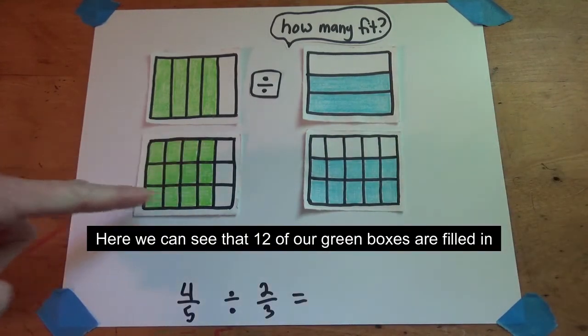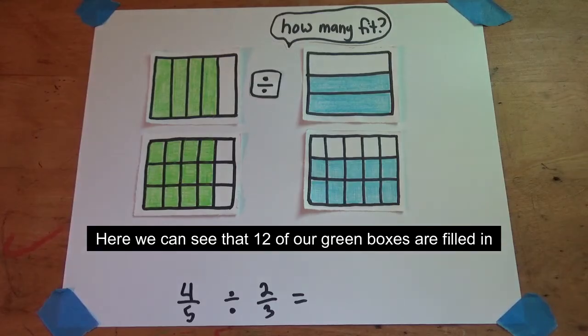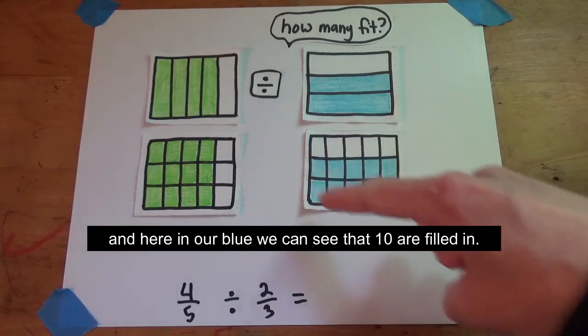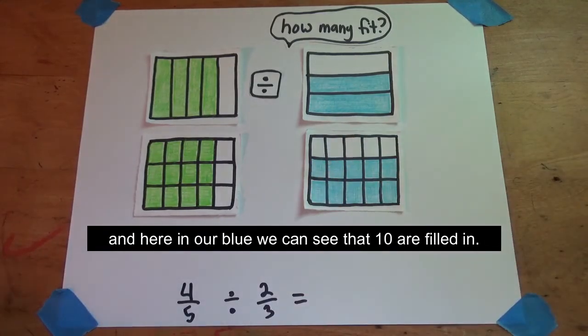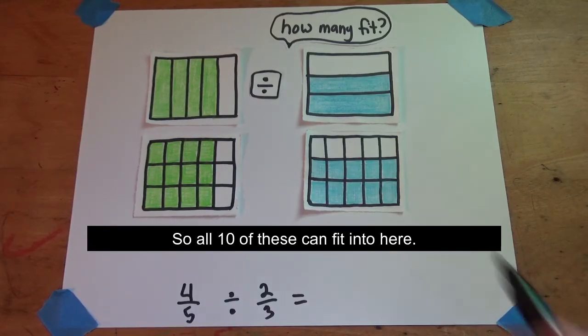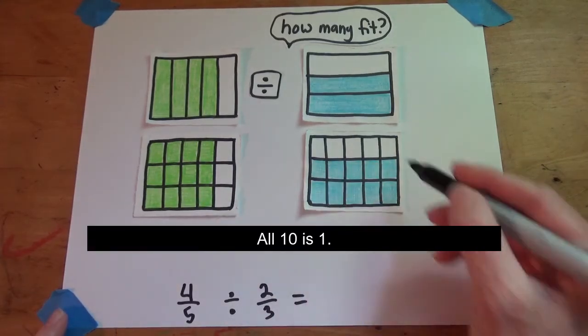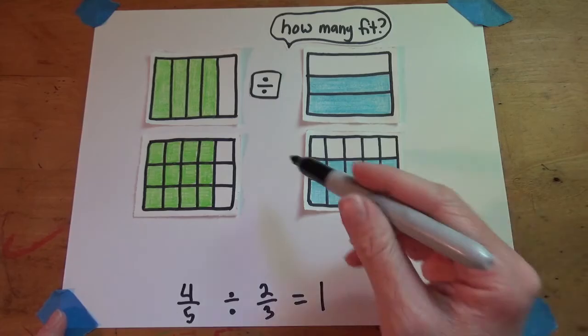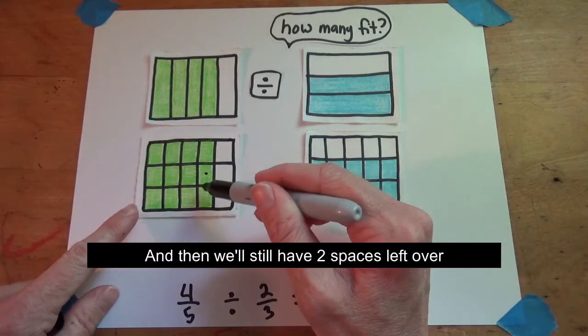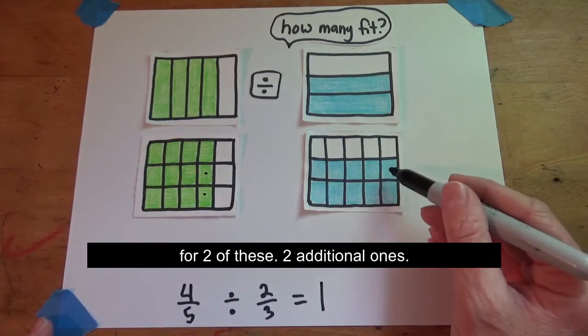So here we can see that twelve of our green boxes are filled in, and here in our blue we can see that ten are filled in. So all ten of these can fit into here, so all ten is one, and then we'll still have two spaces left over for two of these.